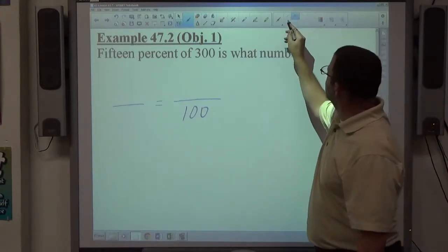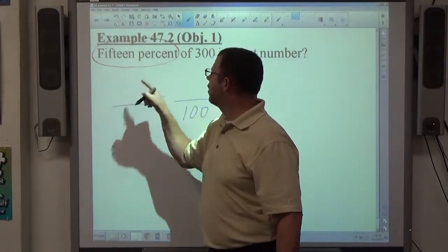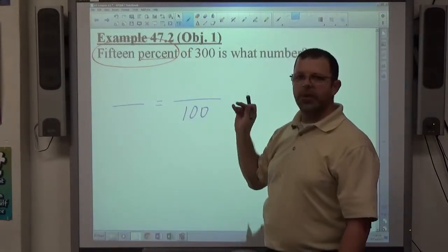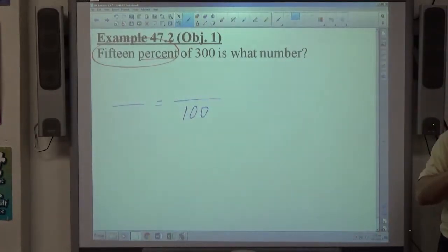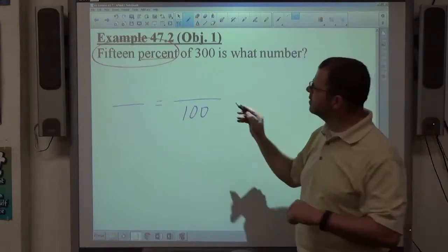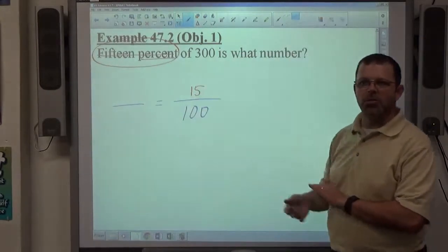The percent we can see is 15%. I know that because it has the word percent next to it. But be careful when they use words to describe things, like if it says 230, sometimes people don't see the 30. So 15% goes over 100. Percent always goes over 100.